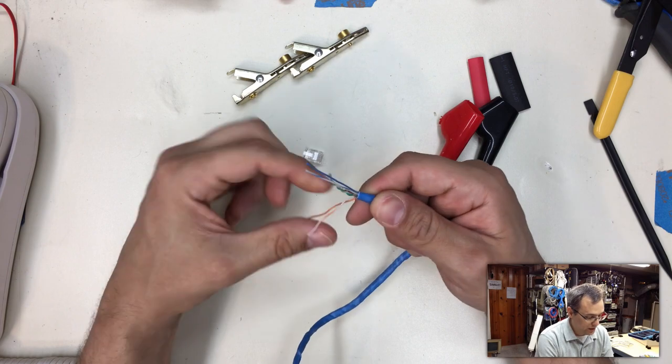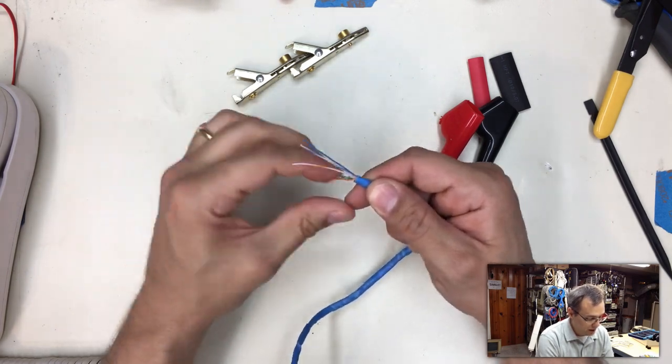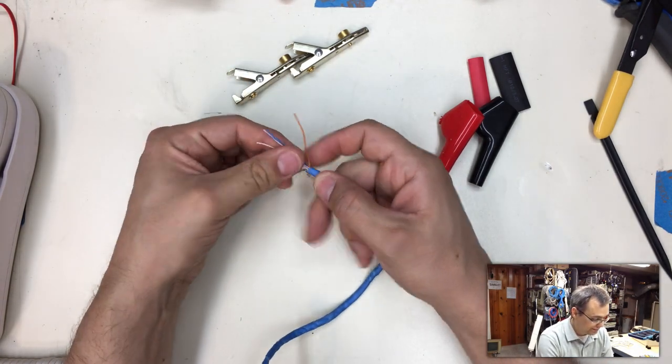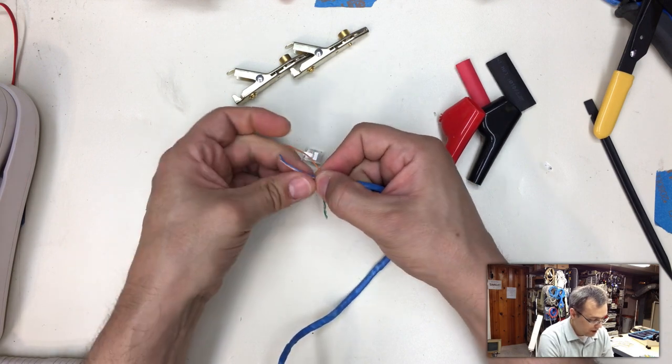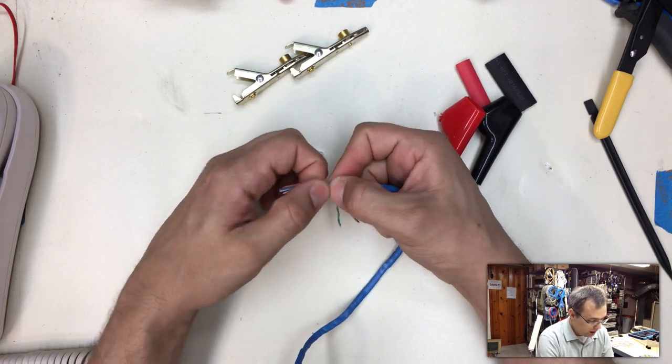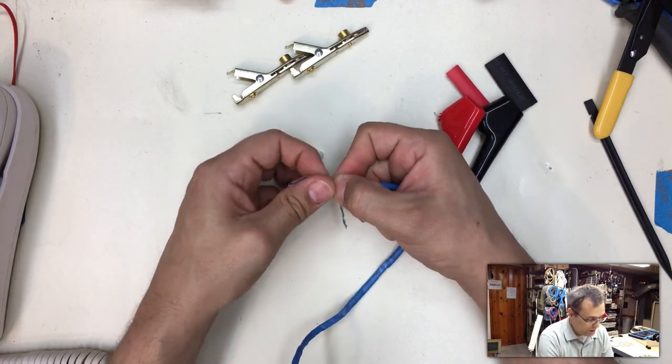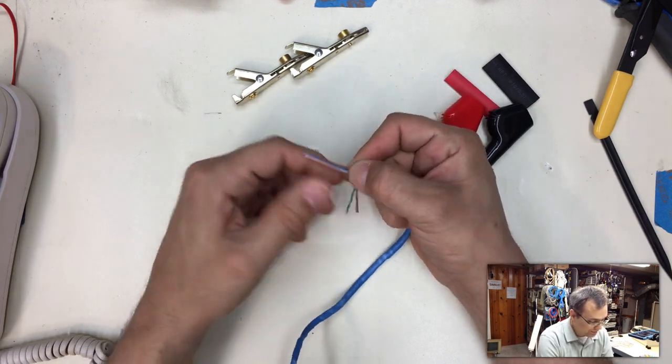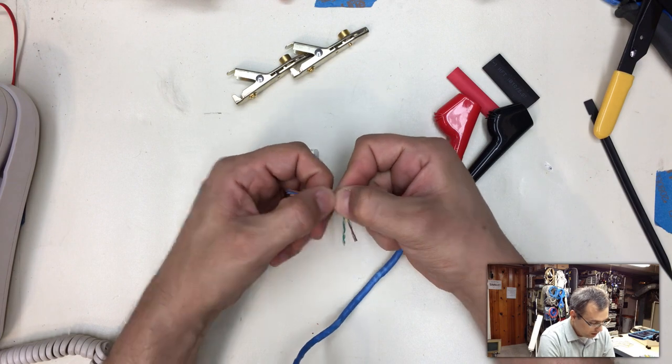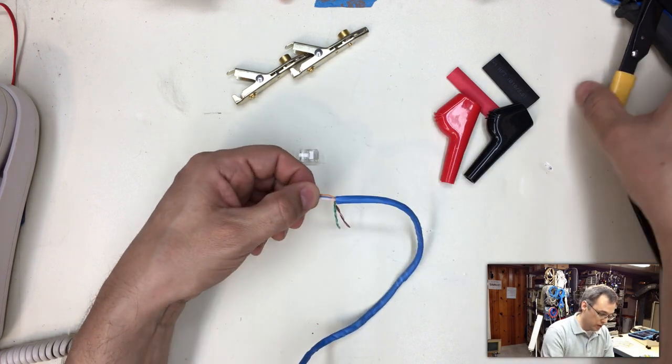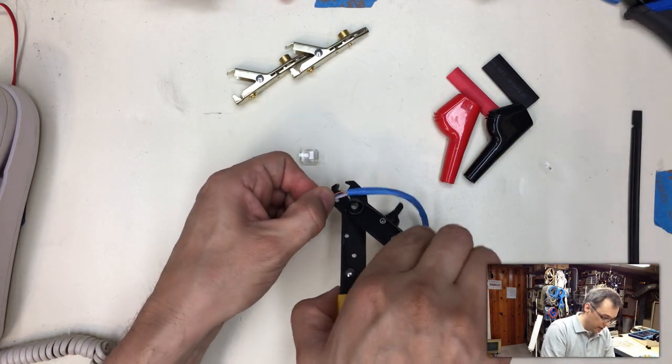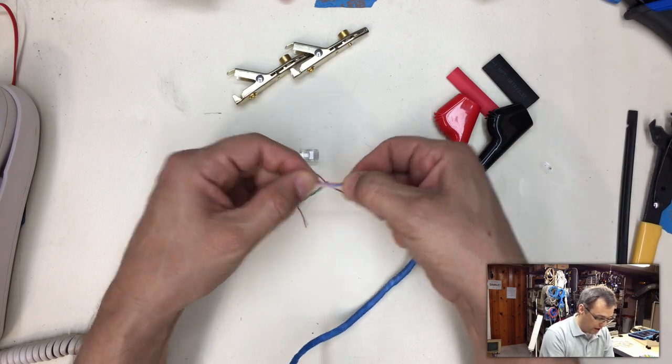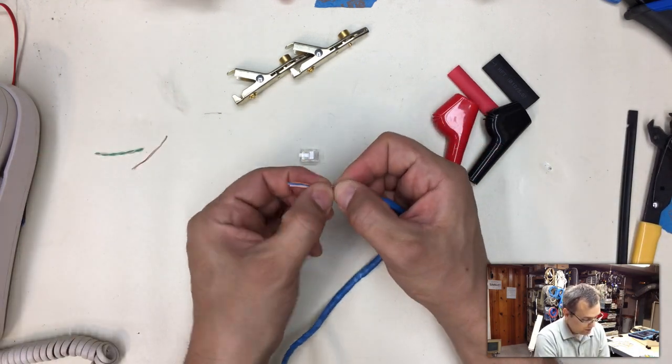And I find it's also easier when doing this to go ahead and terminate the orange pair inside here as well. Again following the same pattern putting the tip on the left and the ring on the right like this. So it's white orange, white blue, blue, orange. The orange pair isn't going to be used at all. It just helps bite in here a lot better. And so you get those aligned and then you cut off the excess over here, the brown and green because we're not going to be using that.